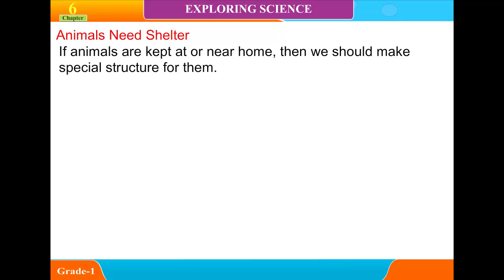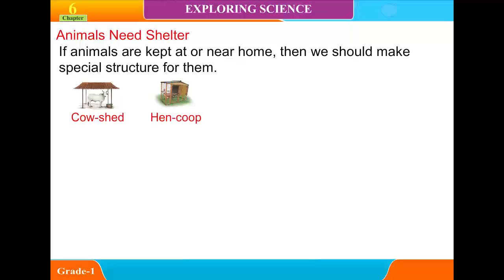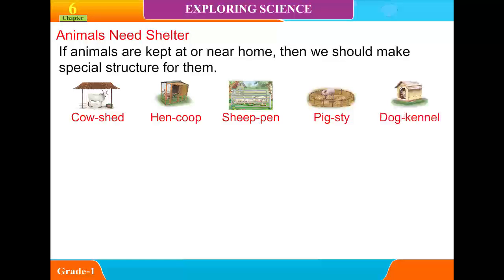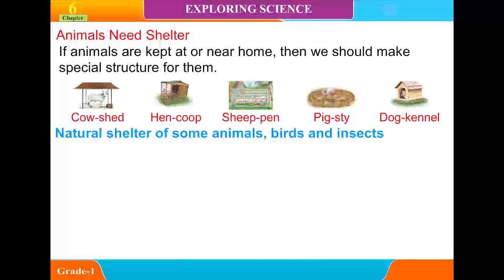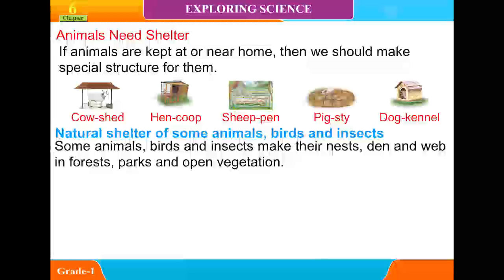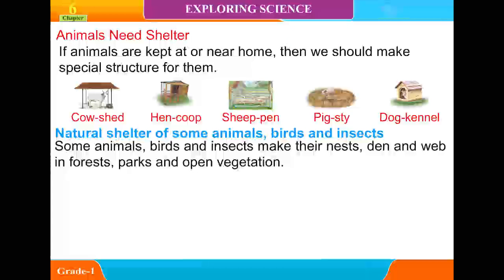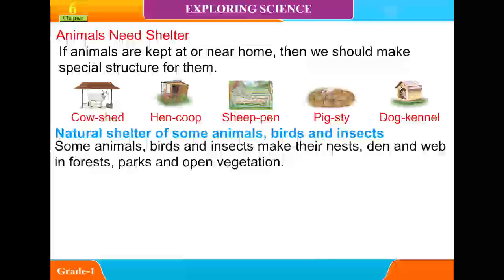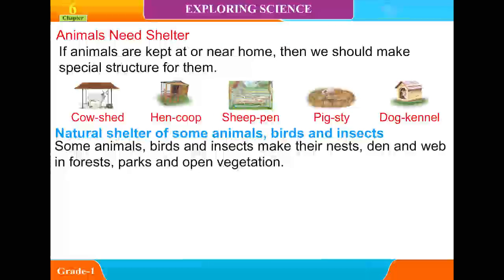Animals need shelter. If animals are kept at or near home, then we should make special structures for them. These include a cow shed, hen coop, sheep pen, pigsty and duck pond. Some animals, birds and insects make their nests, dens and webs in forests, parks and open vegetation.